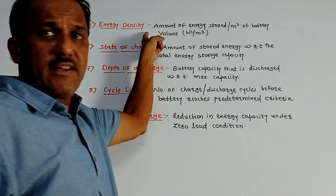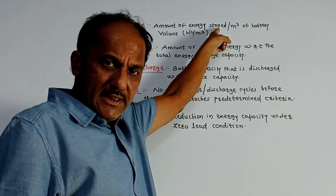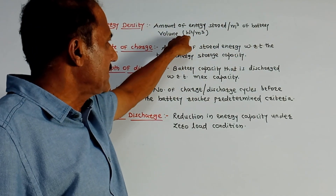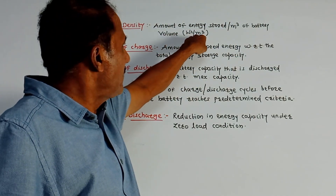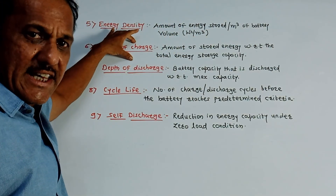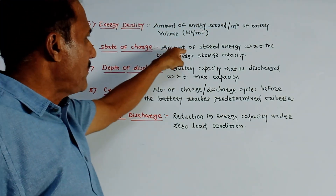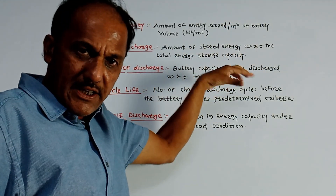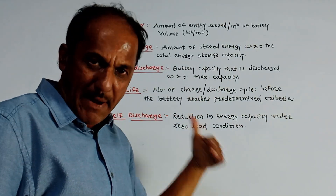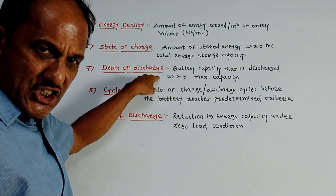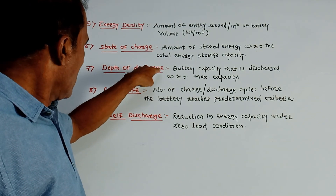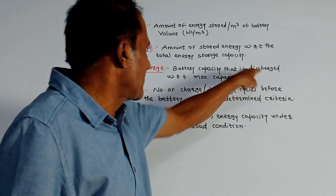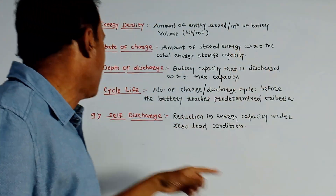Next is energy density — the amount of energy stored in the battery per cubic meter, expressed in watt-hours per meter cube. State of Charge (SOC) represents the amount of stored energy with respect to the total energy storage capacity of the battery. Next is Depth of Discharge (DOD) — the battery capacity that is discharged with respect to the maximum capacity of the battery.